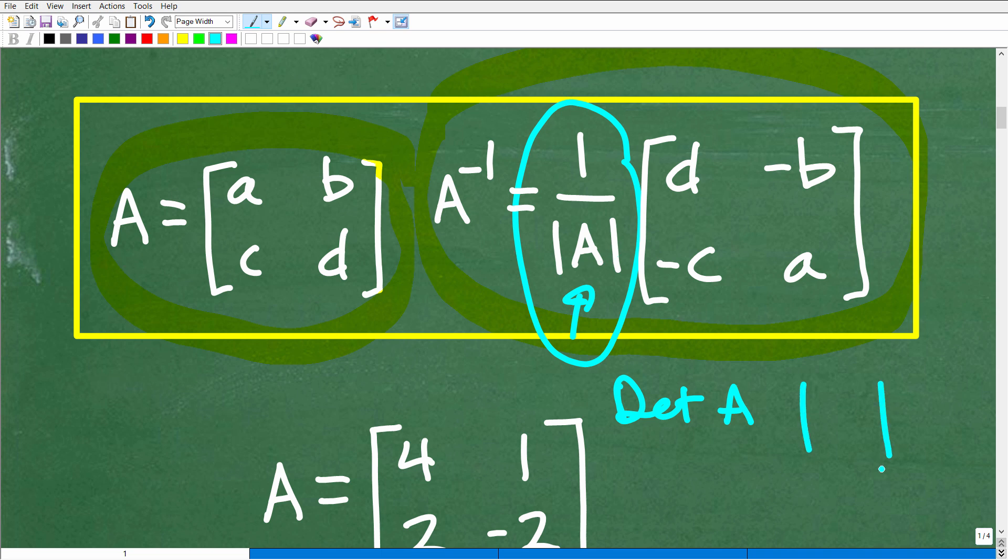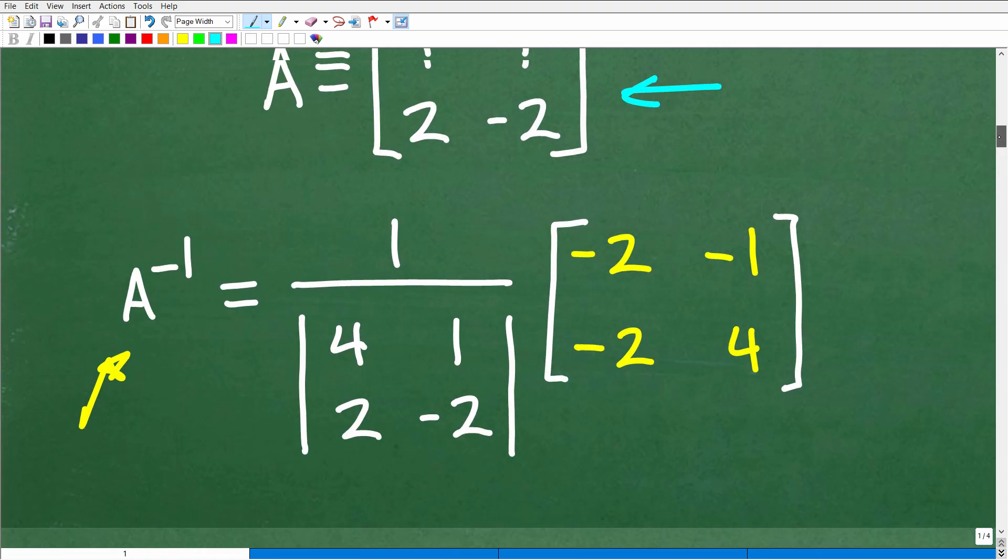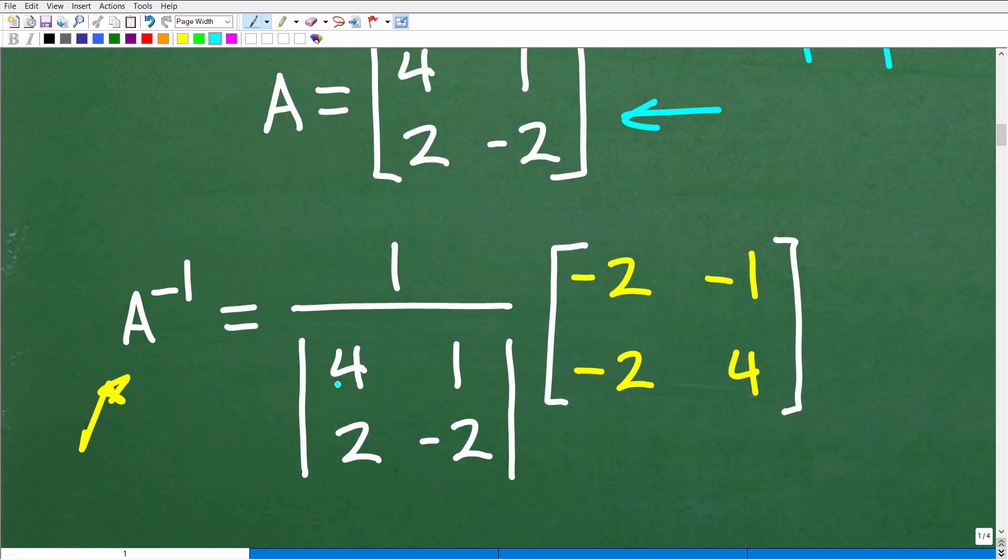You know, we kind of write it as det A. This is the determinant of matrix A. So anytime you have like these bars, they look like absolute value bars. We have to find the determinant of this matrix, whatever a given matrix is, and we have that given matrix right here.